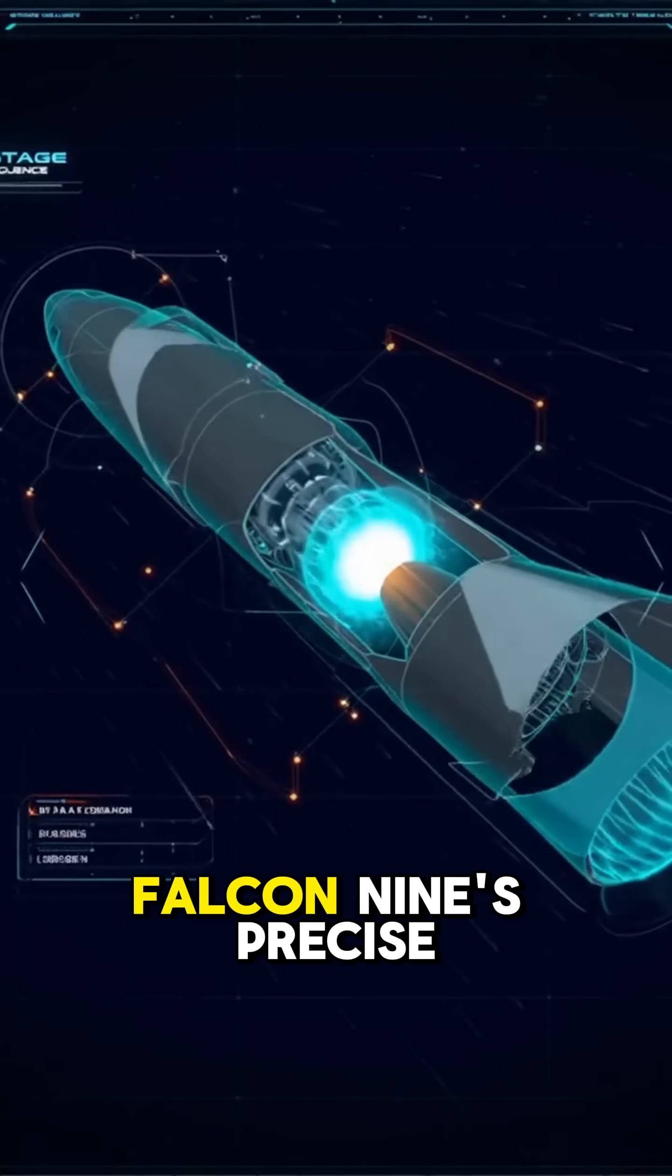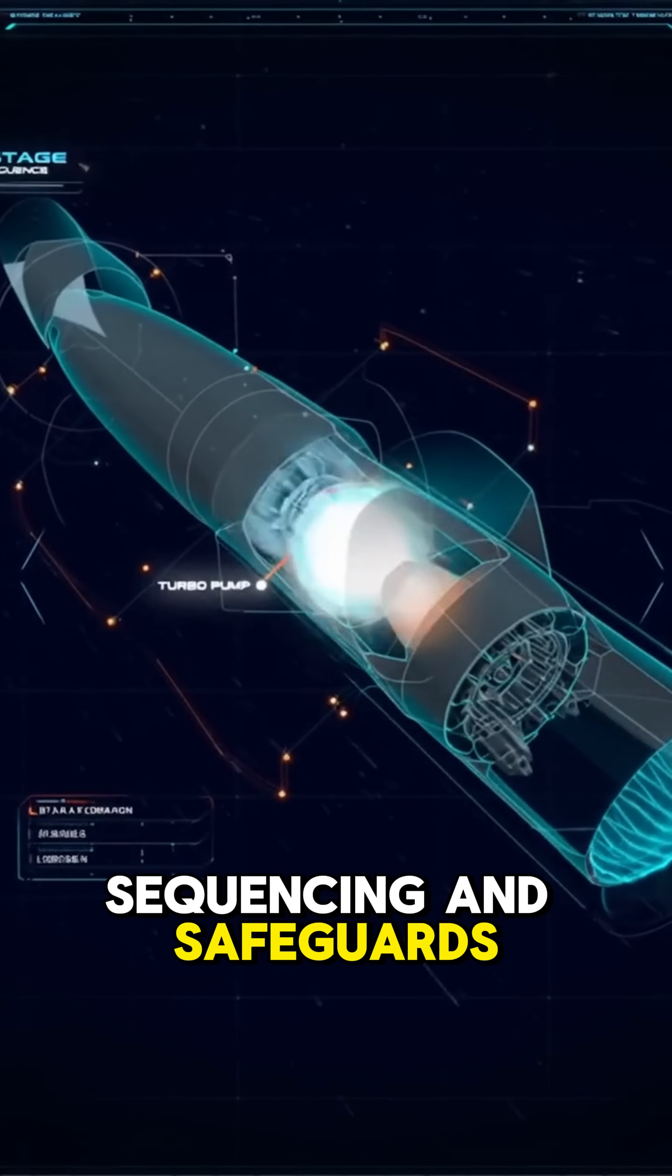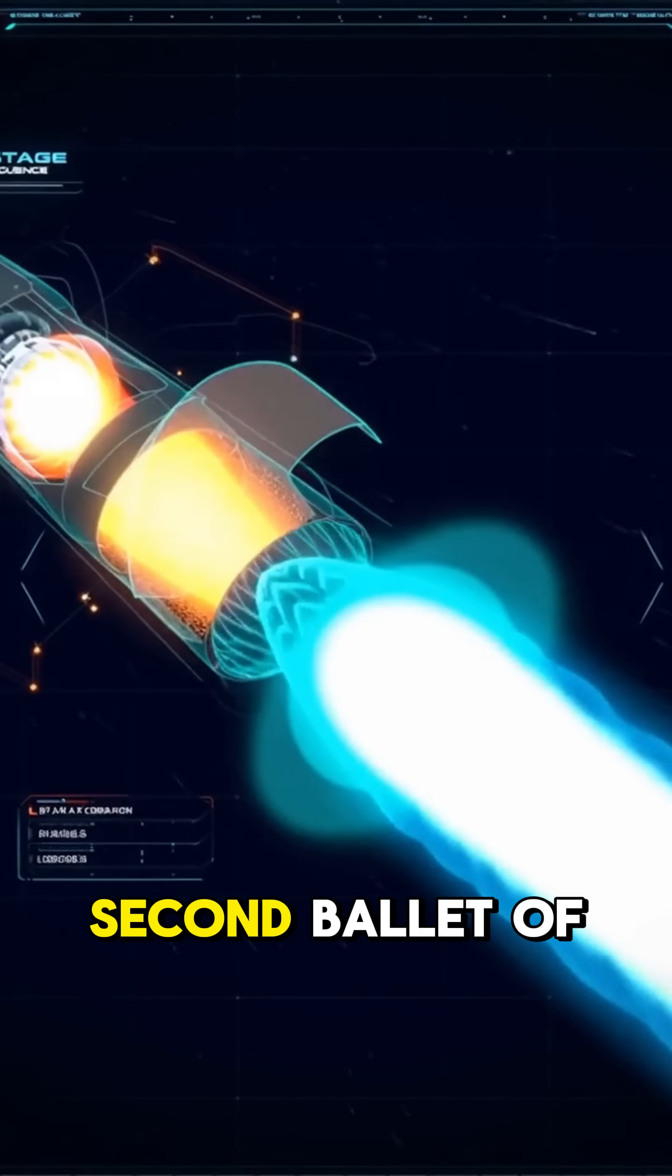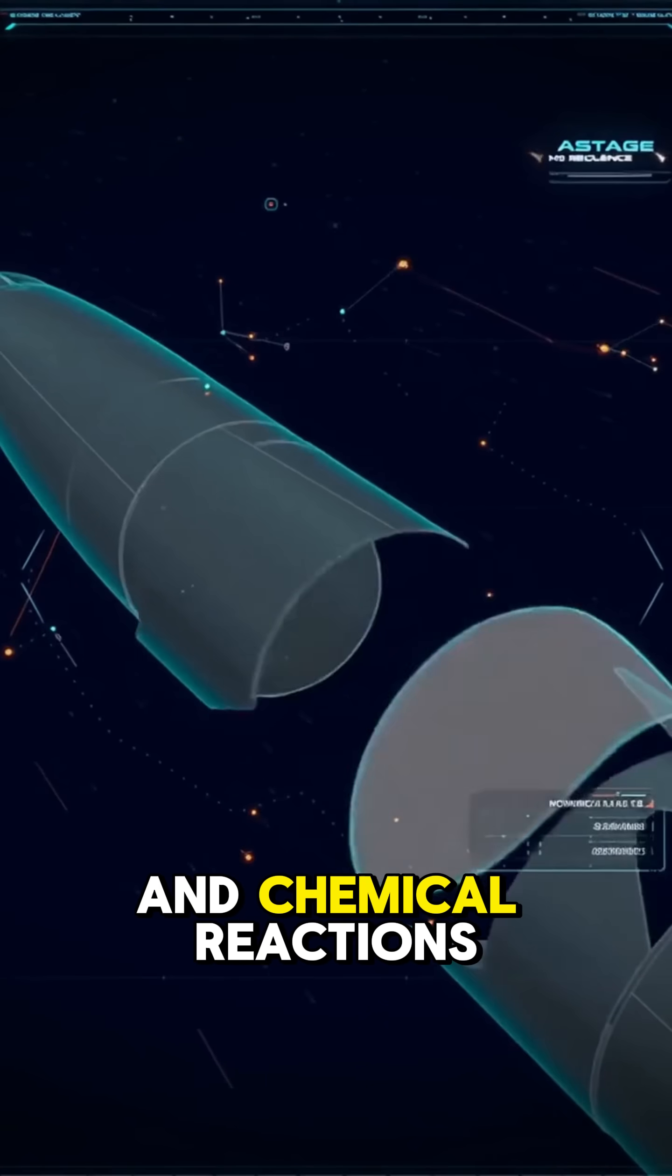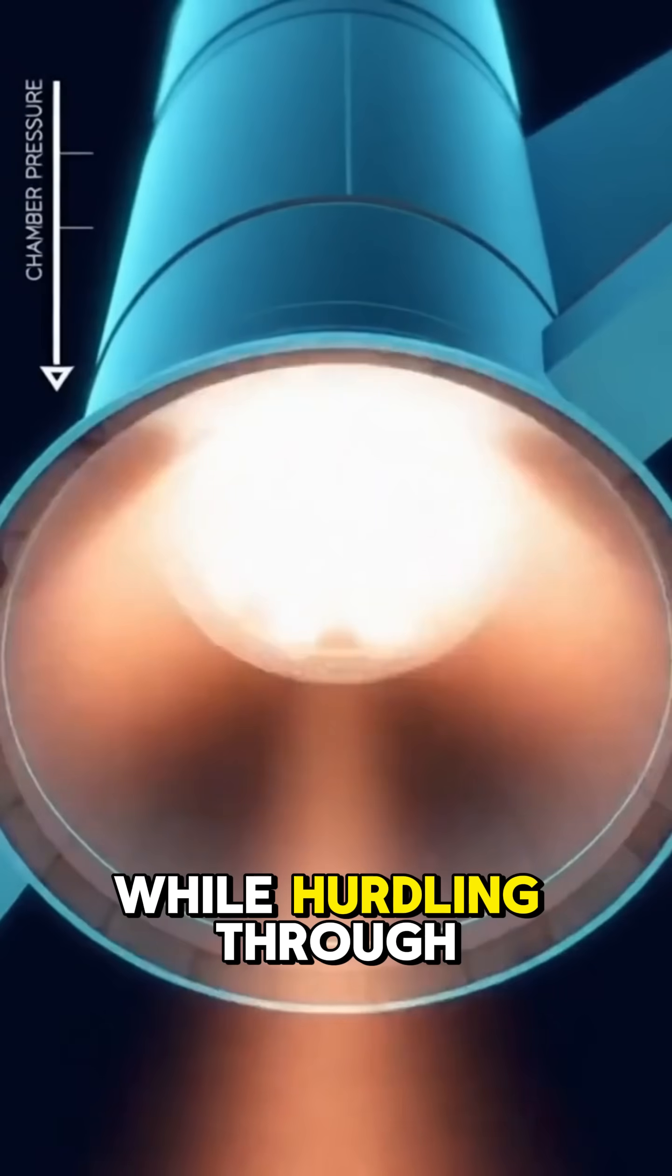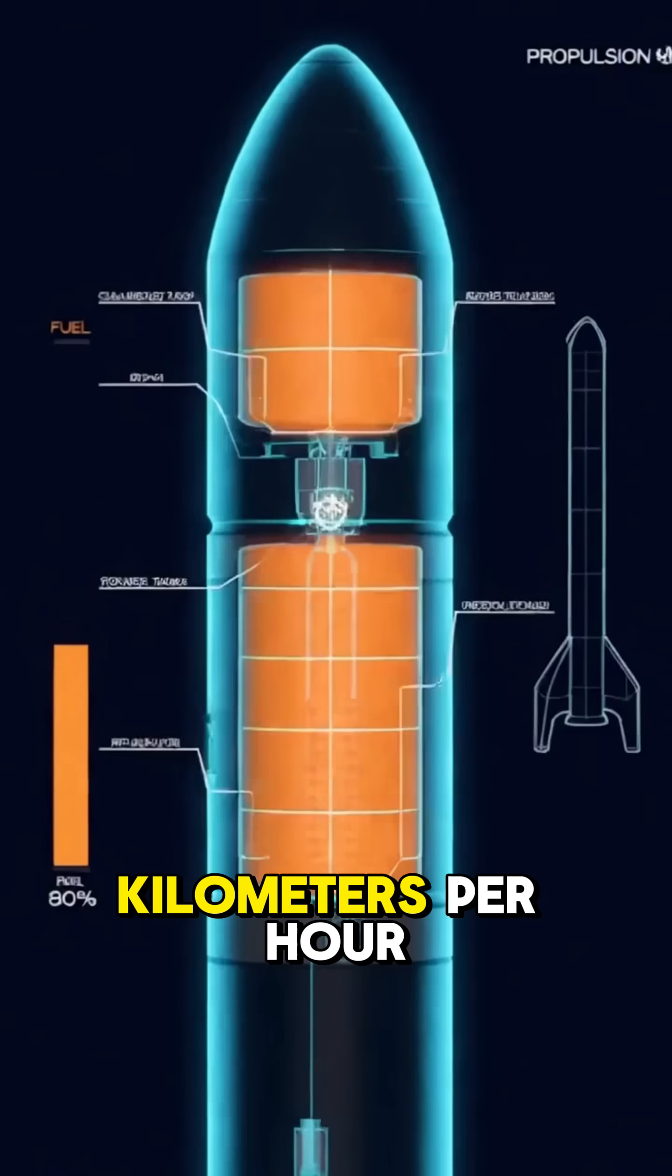In contrast, Falcon 9's precise sequencing and safeguards prevent such disasters. It's a split-second ballet of mechanical movements and chemical reactions all happening while hurtling through space at 20,000 kilometers per hour.